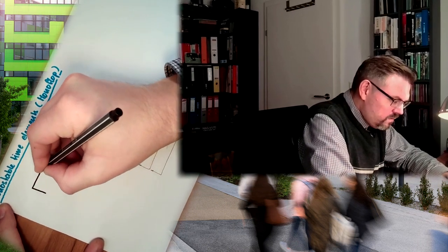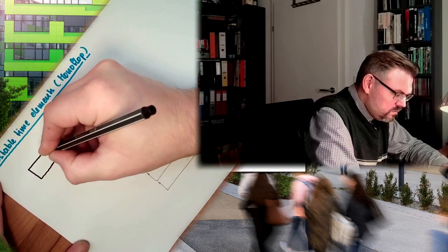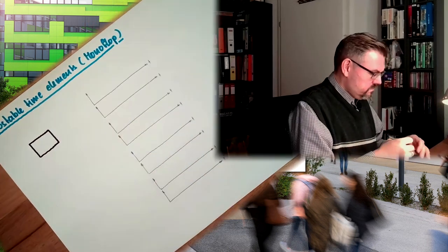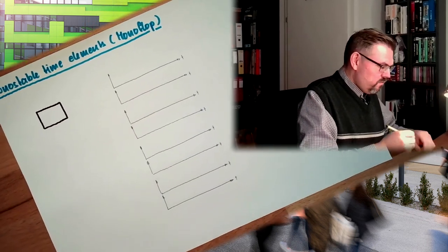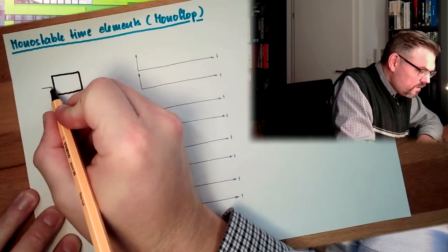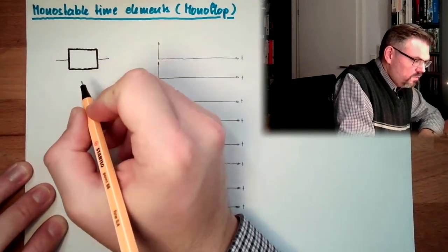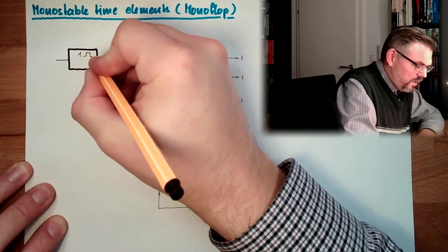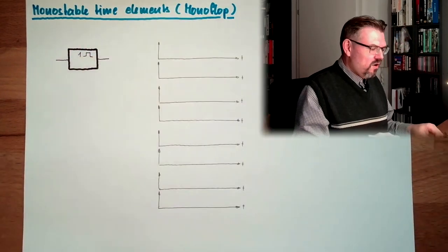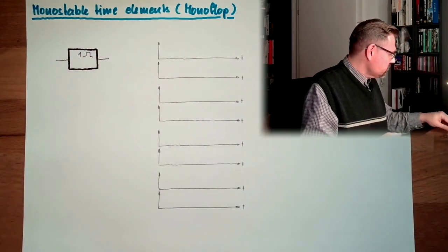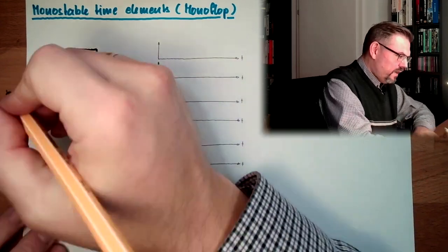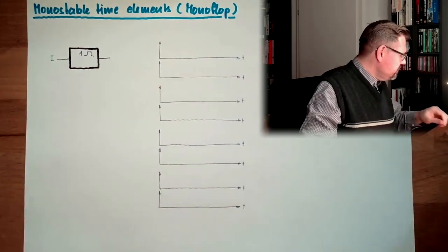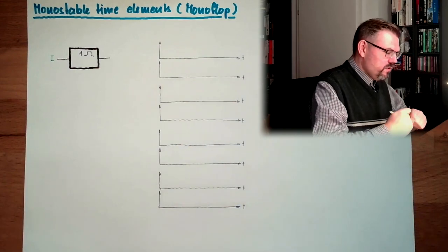The symbol looks like this. So we have a box. We have an input i, we have an output q, and inside we have such pulse. This is how this would look like. So we have somewhere an input i, and we have somewhere an output q.